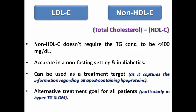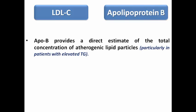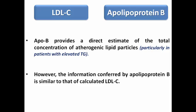Non-HDL can be used as a surrogate goal for all patients, especially those with hypertriglyceridemia or diabetics. Regarding ApoB lipoprotein, it provides a direct estimate of the total concentration of atherogenic lipid particles, especially in those with elevated triglycerides, and this information is nearly similar to that of calculated LDL cholesterol. ApoB is also a treatment surrogate, but not as important as non-HDL cholesterol.